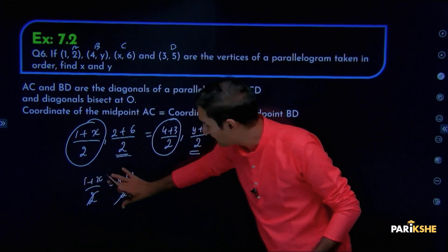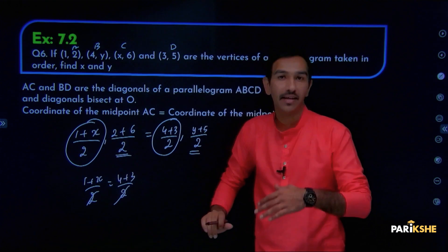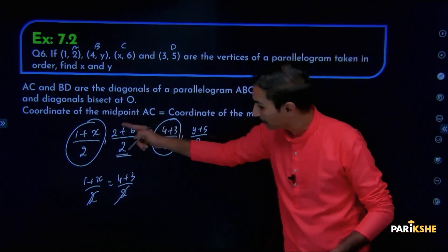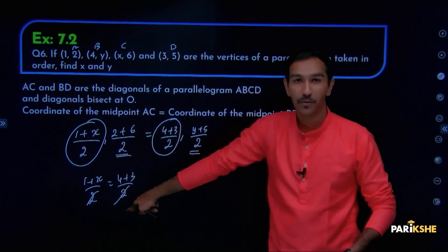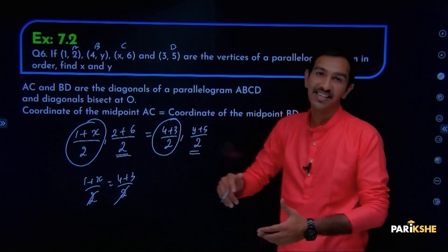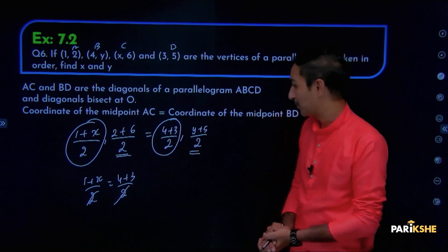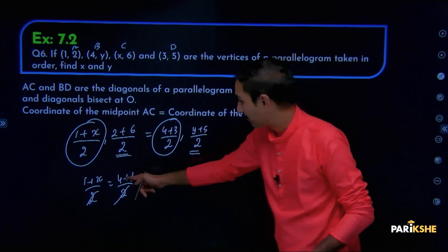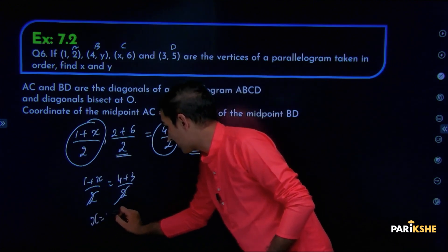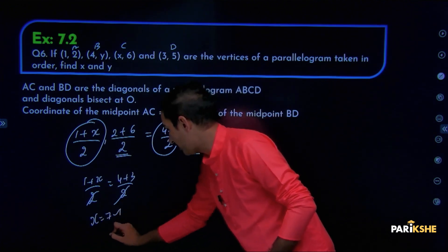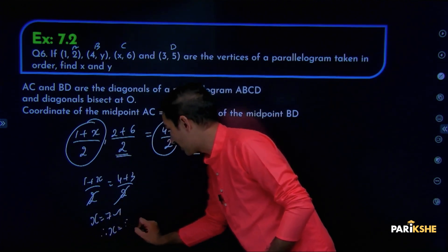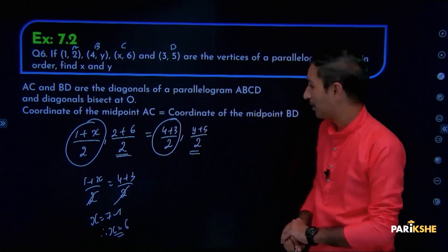One term idhu, one term idhu — LCM togon cancel maadi bheko. 11 term idhu, denominator same agathe, direct cancel maadi bheko. 4 plus 3: 1 na ikkade ekkal c, yen agathe — 7 minus 1. Therefore x is equal to 6. X ina answer banthu.